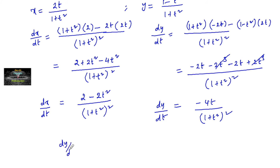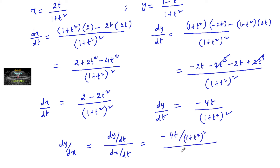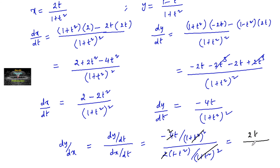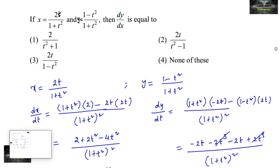Since we want dy by dx, which is equal to dy by dt upon dx by dt. That is minus 4t upon (1 plus t square) whole square, divided by 2 times 1 minus t square upon (1 plus t square) whole square. We can cancel these two terms, giving dy by dx equal to 2t upon t square minus 1. This is the second option, so this is the answer.